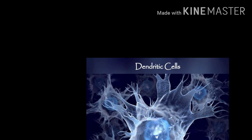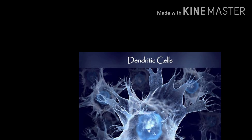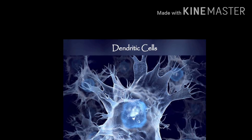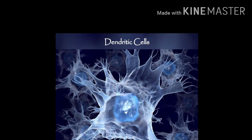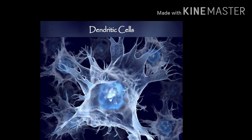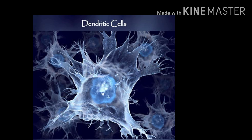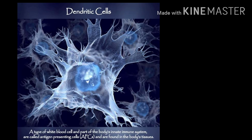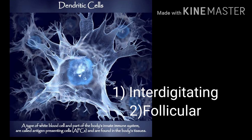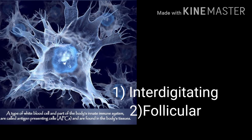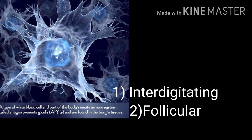A dendritic cell is a special type of cell present within our immune system. It is of two types: the first one is the interdigitating dendritic cell, and the other is the follicular dendritic cell.